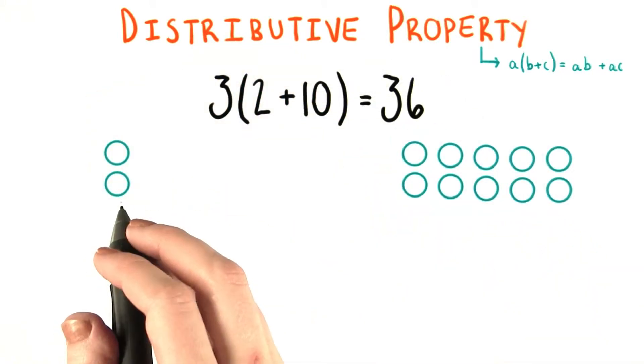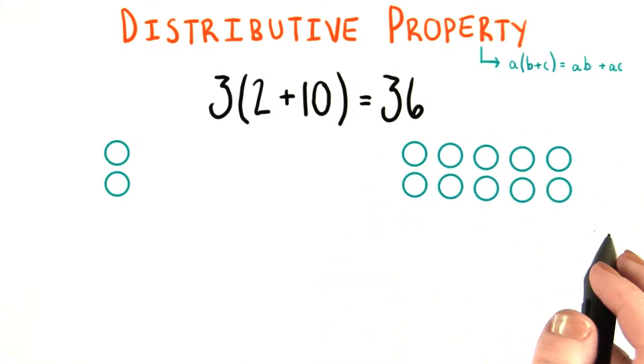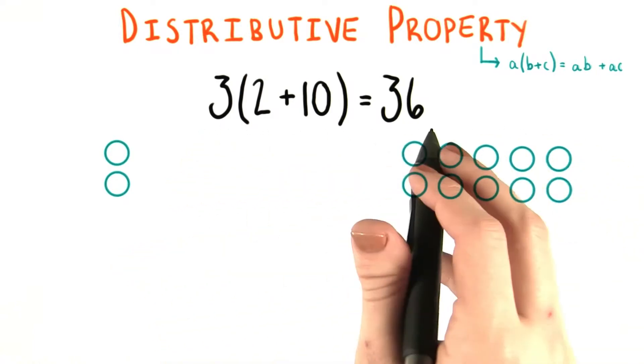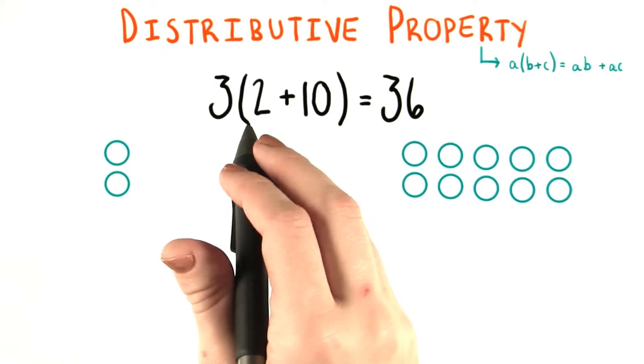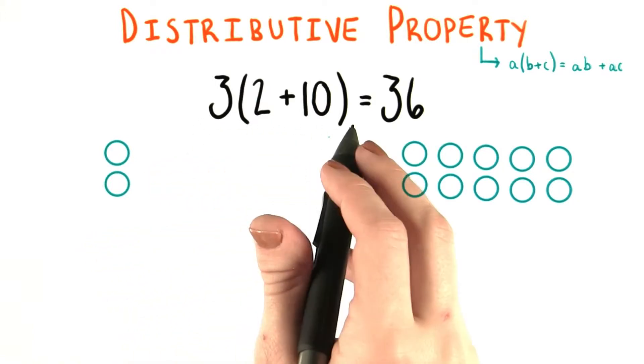So let's say we have a group of 2 circles and also a group of 10 circles. And according to this equation, what we're going to want to do is both add them together and then triple them.